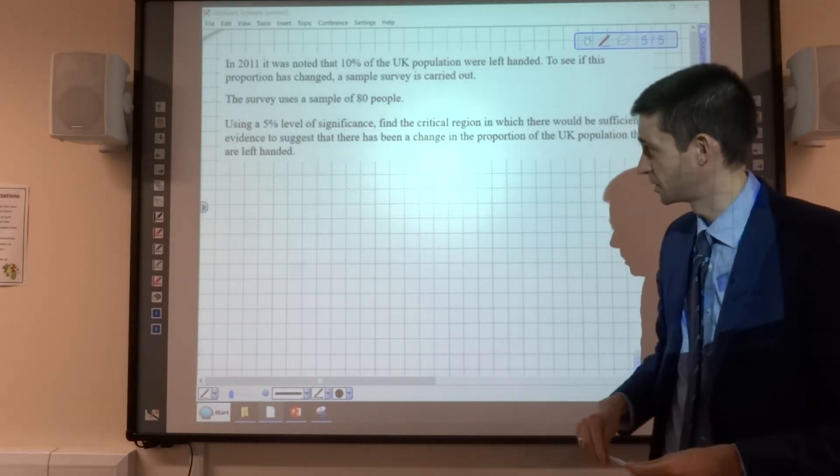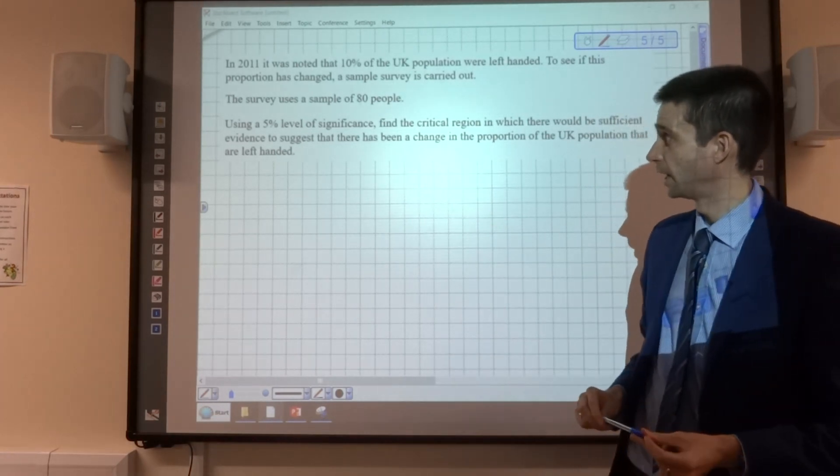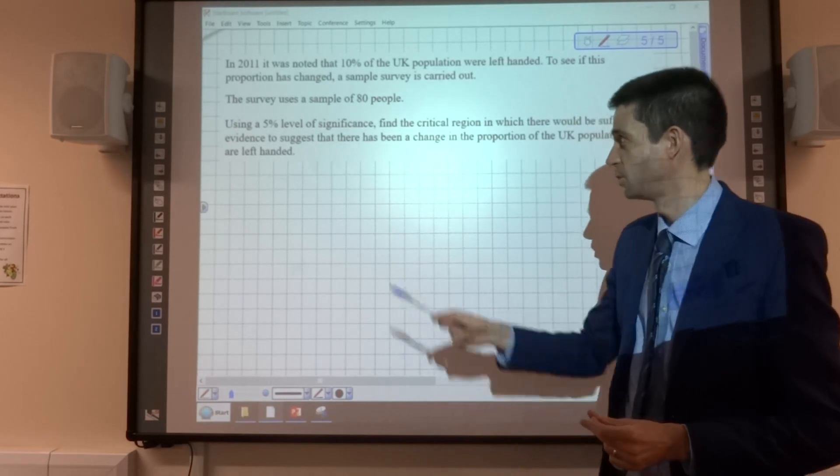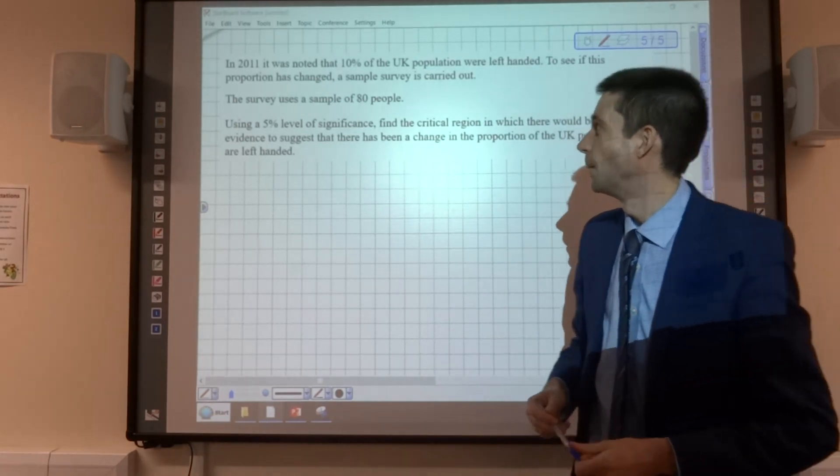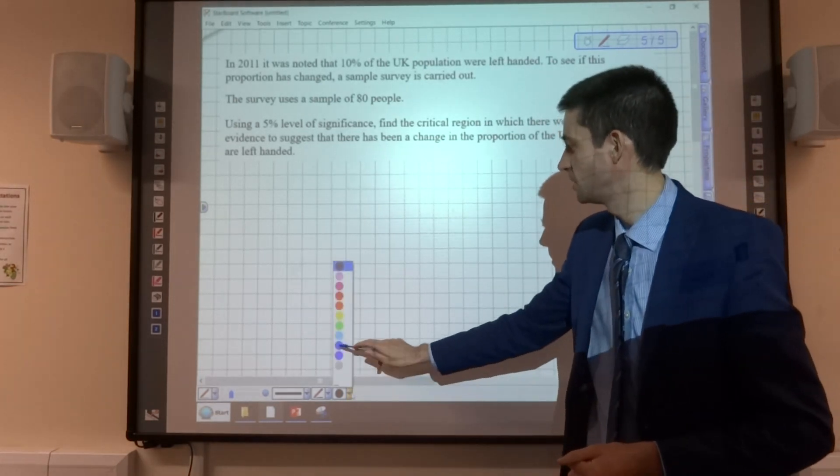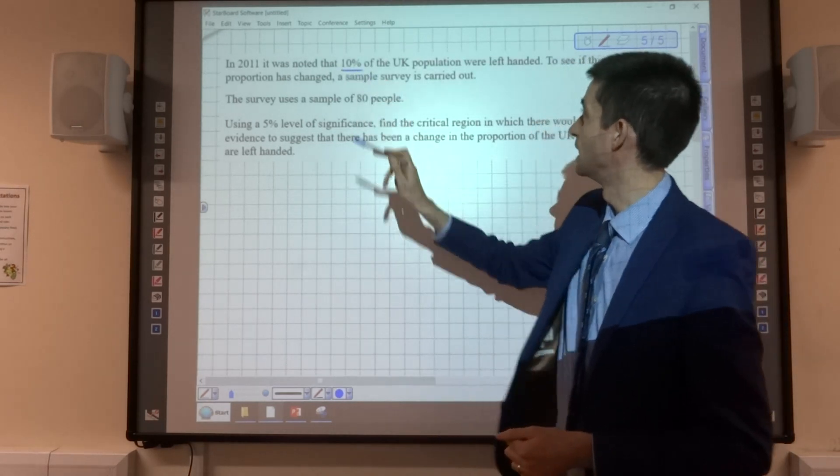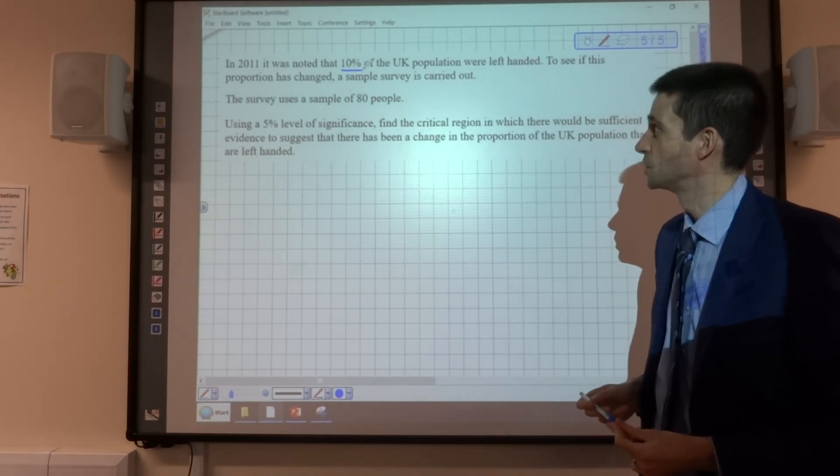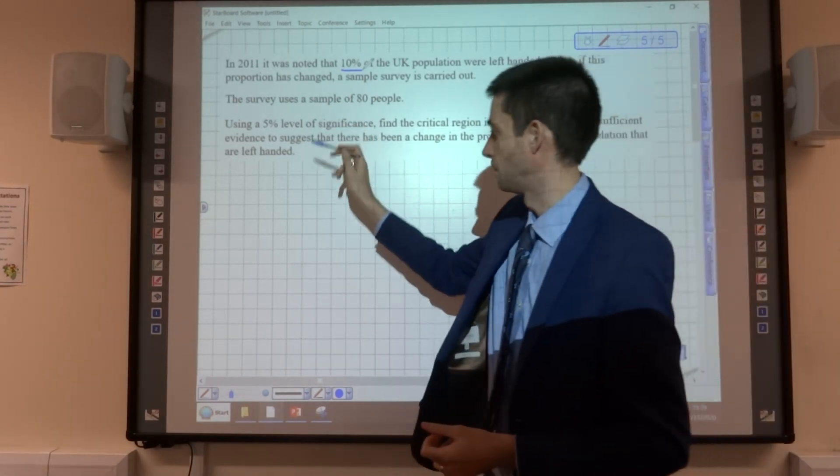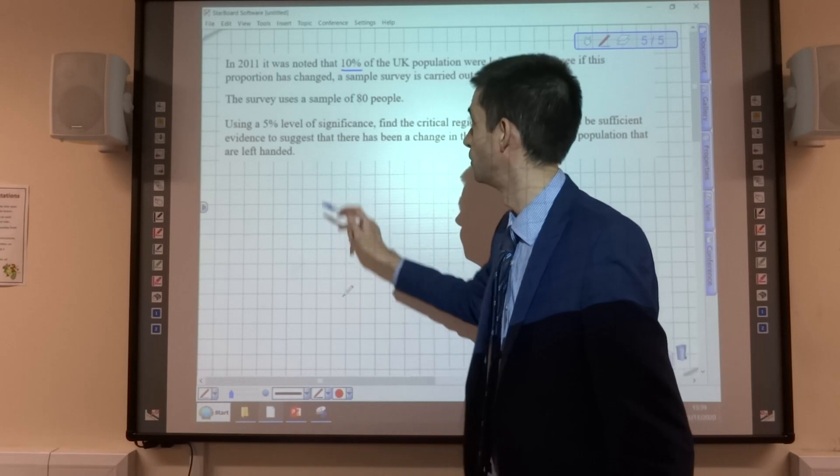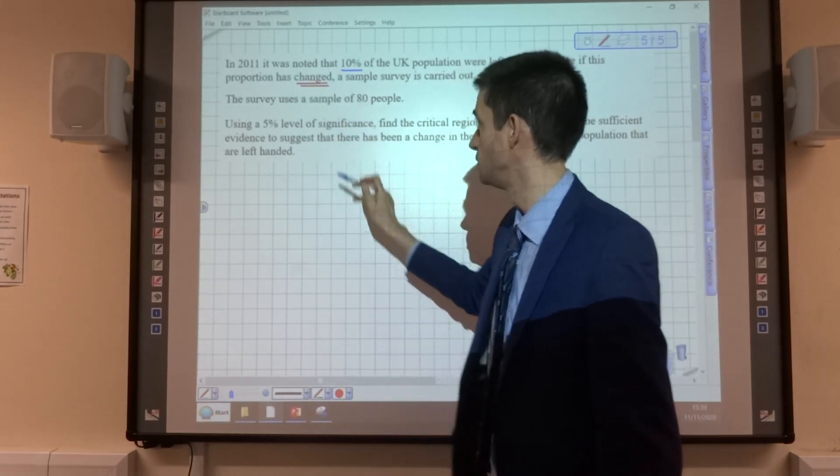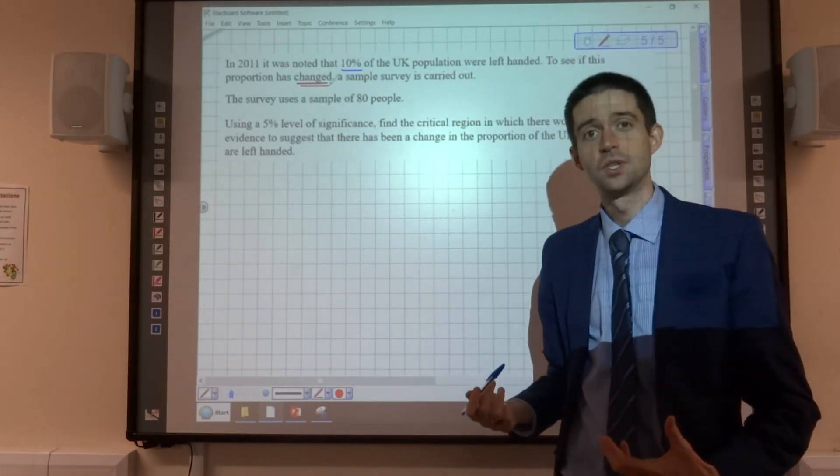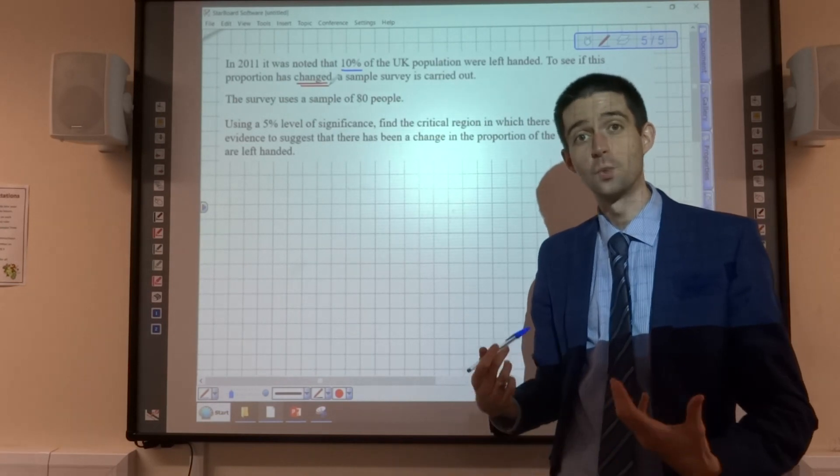So I've rehashed the two-tailed example that I went through when we were looking at hypothesis testing. I've changed the year to 2011, and I've said that it was noted that 10% of the UK population were left-handed, and to see if this proportion has changed, a sample survey is carried out. Now that key word, changed, is the word that indicates to us that this is going to be a two-tailed test, not a one-tailed test.